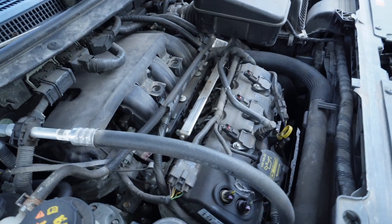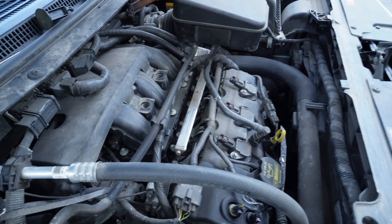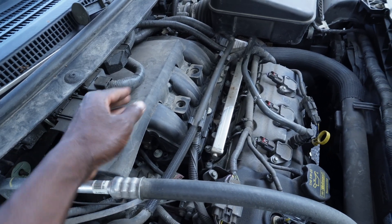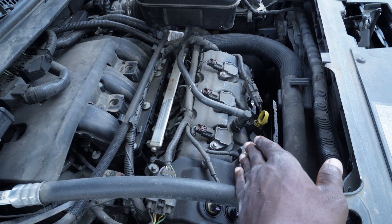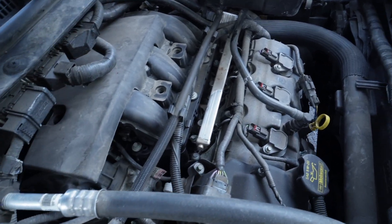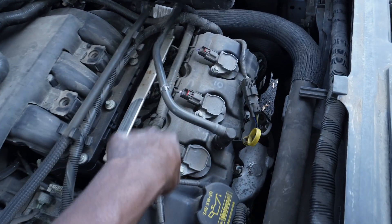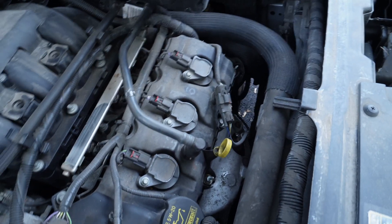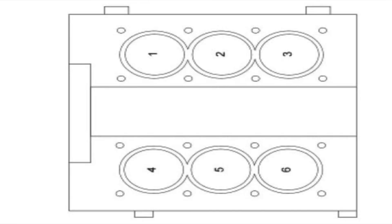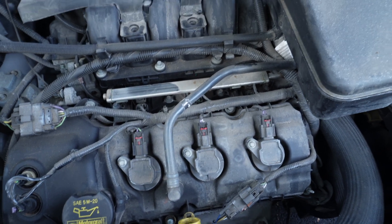Of course, if you have bank one and bank two on a V engine, bank one is closest to the firewall and bank two is towards the front of the engine. You need to count from there. This diagram is fairly easy to find on the internet — it shows the engine layout for bank one and bank two, and bank one is typically where cylinder one is, and you continue counting from there.